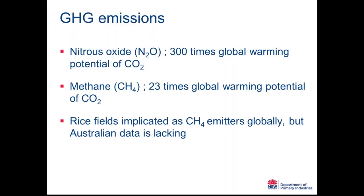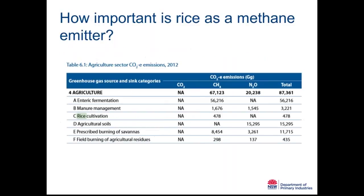Methane is of particular interest because rice fields around the world are implicated as being major methane emitters, but good Australian data is lacking. Looking at ABS data from 2012, rice cultivation produces about 480 gigatons of CO2 equivalent. This data is believed to be produced from IPCC default values and not really based on field data, so this is one of the important assumptions we are testing.